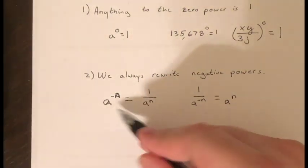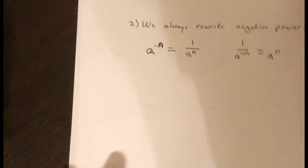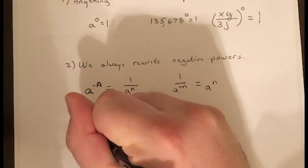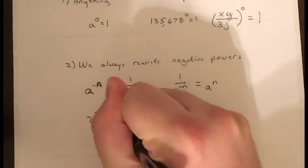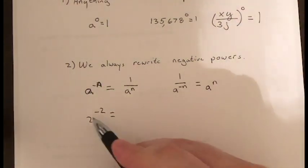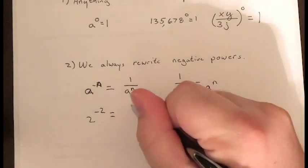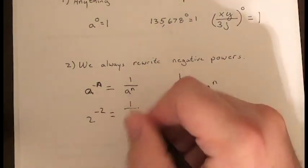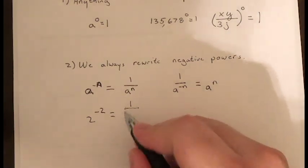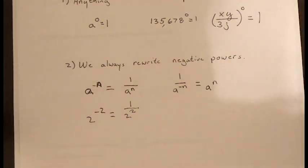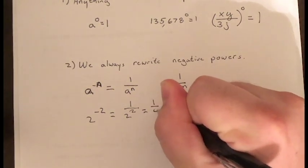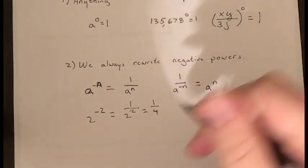We always rewrite negative powers. For example, if I give you two raised to the negative two power, I can simply change this into a fraction and say one over two to the positive two power. That's one over two squared, or simply one fourth.